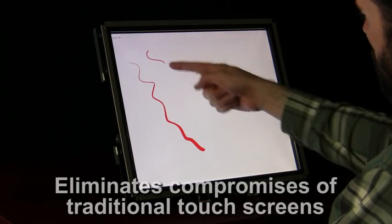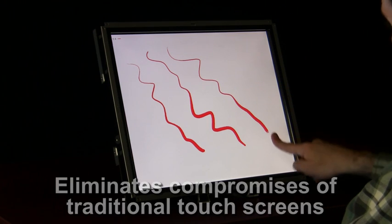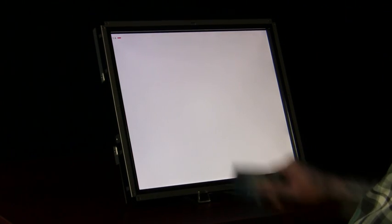ShadowSense eliminates the compromises that are part of traditional touchscreens such as resistive, capacitive, projective capacitive and SAW.